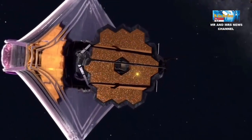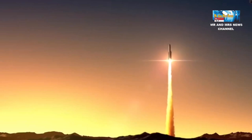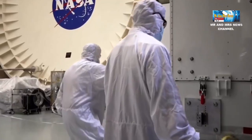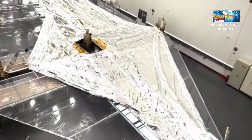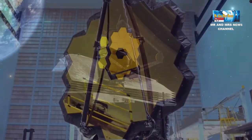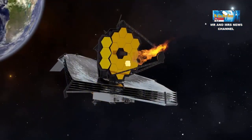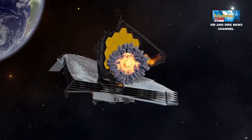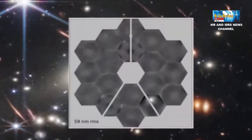Sejak diluncurkan pada 25 Desember 2021, teleskop luar angkasa James Webb NASA telah ditabrak oleh setidaknya 19 batu ruang angkasa kecil, termasuk satu yang besar yang meninggalkan kerusakan pada salah satu dari 18 cermin berlapis emasnya.